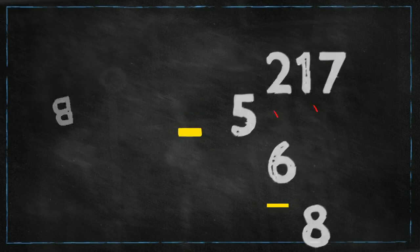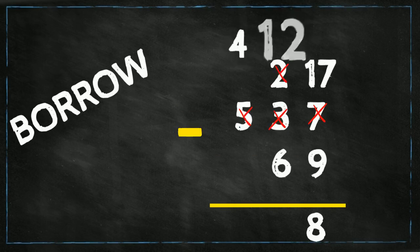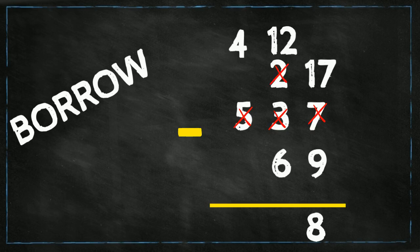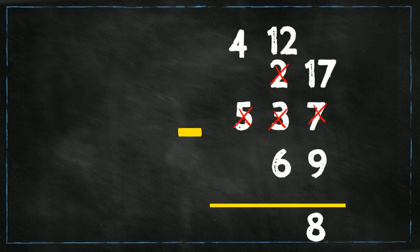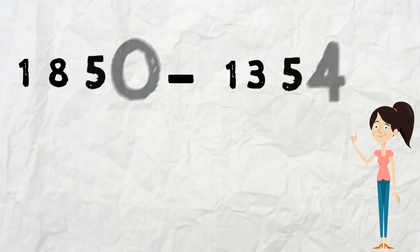Now we move to the tens place: 2 take away 6 — again the top number is smaller, so we borrow from the neighboring 5. The 5 changes to 4, and the 2 changes to 12. So 12 take away 6 equals 6. Then 4 take away 0 equals 4. The difference between 537 and 69 is 468.